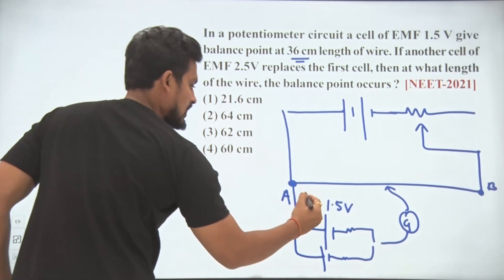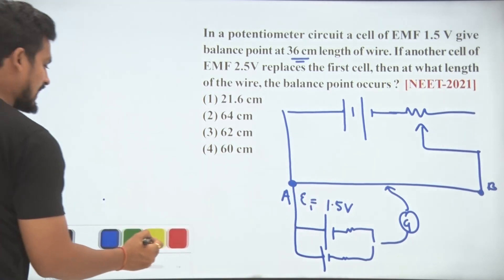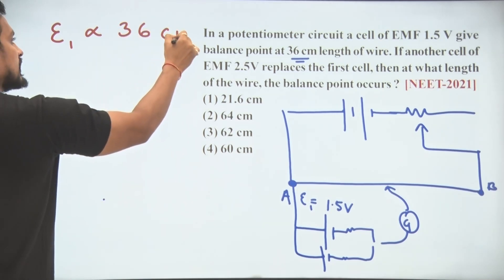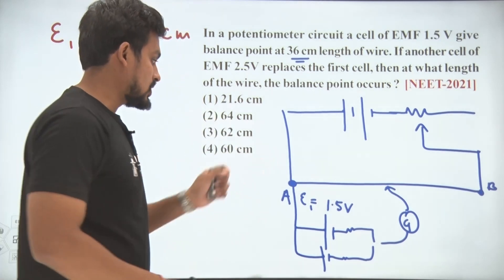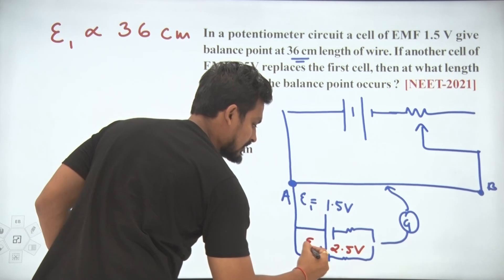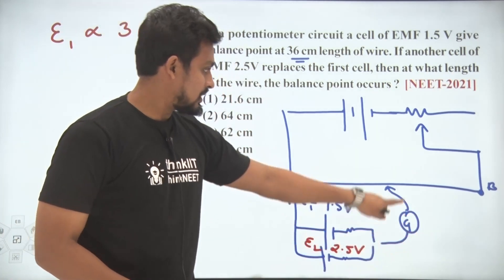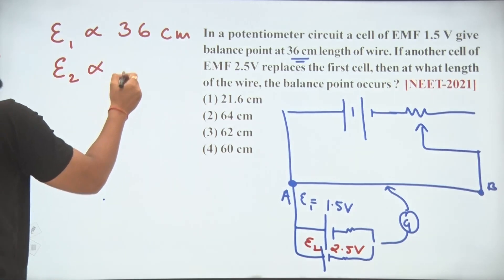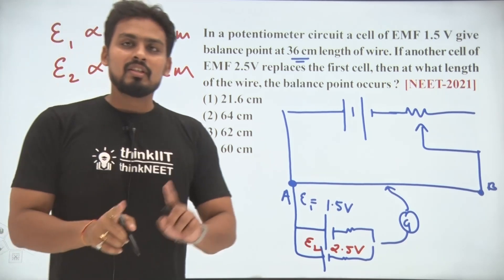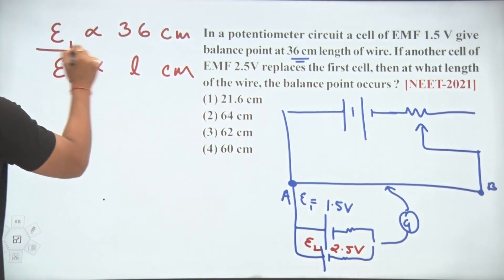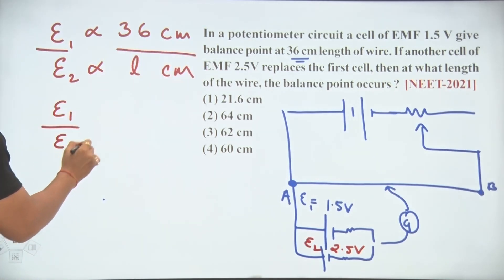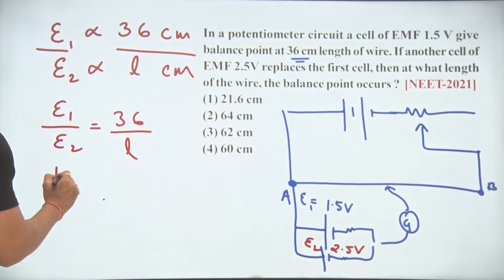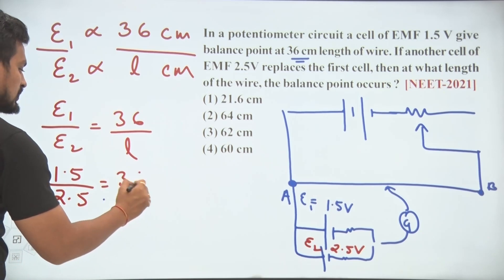We can say E1 is directly proportional to 36 centimeter. Another cell of 2.5 volt is attached — this is E2. E2 is directly proportional to some length L which we need to calculate. Since the proportionality constants are the same, dividing gives E1 upon E2 equals 36 divided by L. So 1.5 upon 2.5 equals 36 by L.